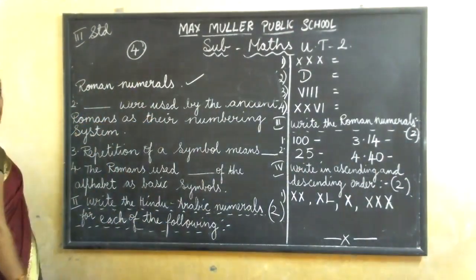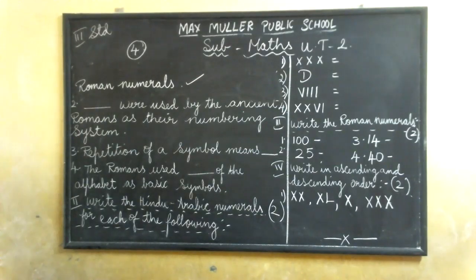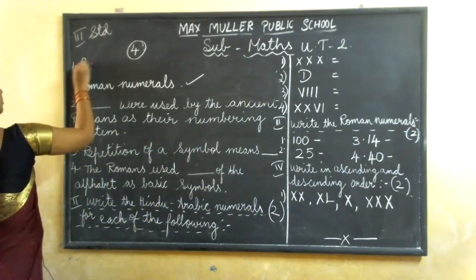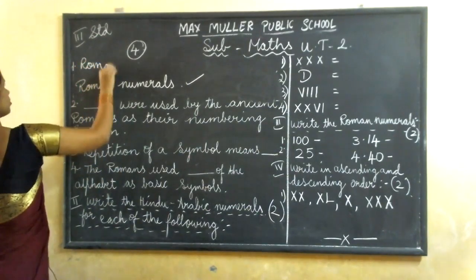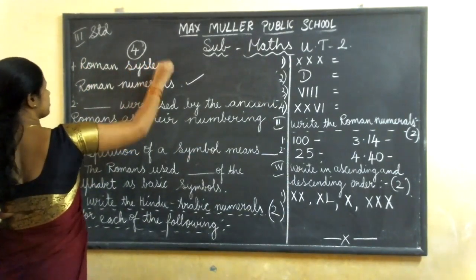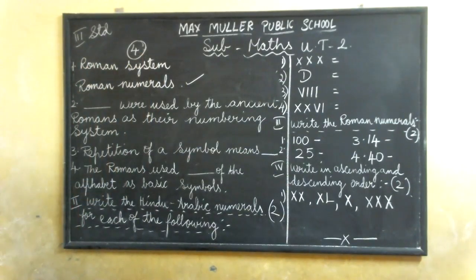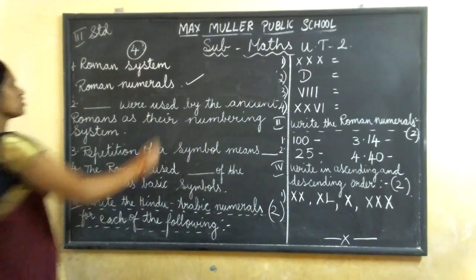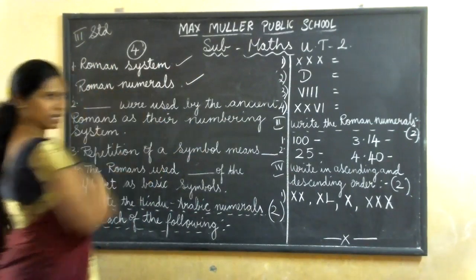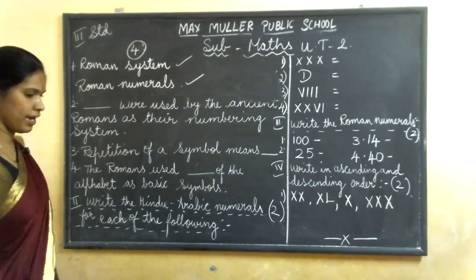Finished all of you? Next. First one is Roman system. First one — if you have not corrected, check and correct. First one: Roman system. Second one is Roman numerals. Finished? Next.